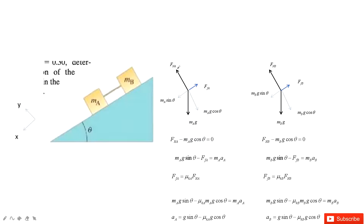For object A at the y-component: normal force minus gravity equals zero. At the x-component: M_A·sinθ minus friction equals M_A times acceleration. The friction is mu_kA times the normal force. You can solve the acceleration for A independently. Since the cable is loose, acceleration A and acceleration B are not the same — they depend separately on θ and their respective coefficients.